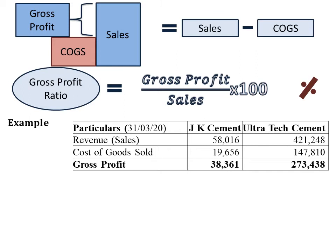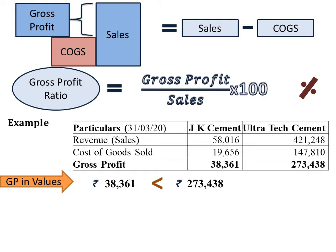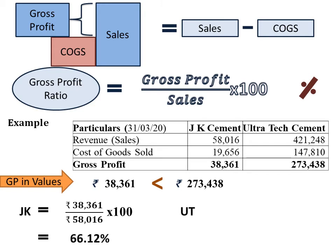Now, if we look at only values, gross profit of Ultra Tech Cement is more than J.K. Cement. Let us see the result after calculating the gross profit ratio of both companies. For J.K. Cement Limited, gross profit ratio is rupees 38,361 divided by 58,016 into 100, that is 66.12 percent. For Ultra Tech Cement Limited it is rupees 2,73,438 divided by rupees 4,21,248 into 100, that is 64.94 percent.